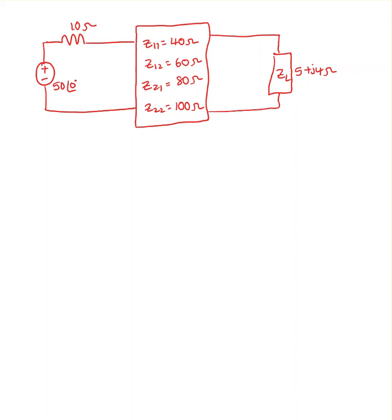Here is another example. He gave us the z-parameters. The question is asking about finding i1 and i2.